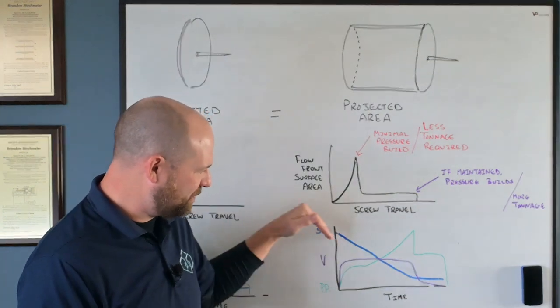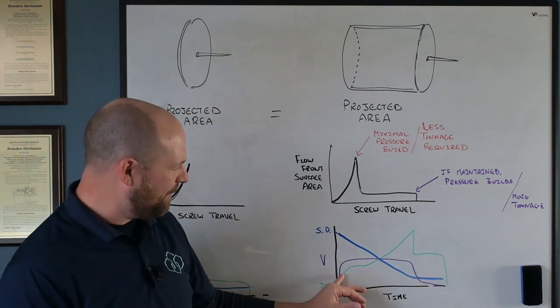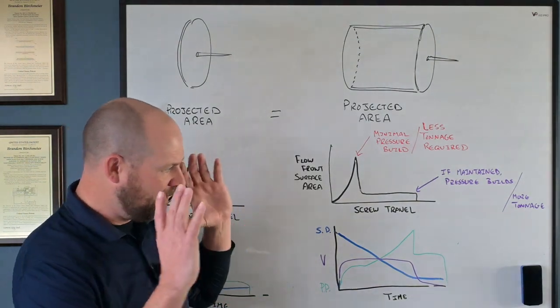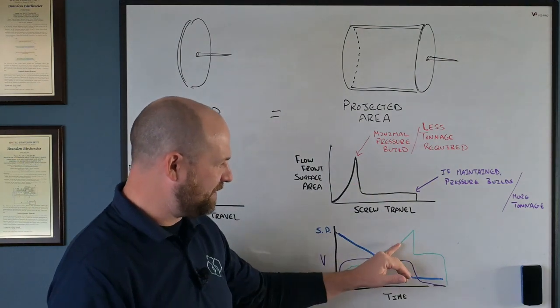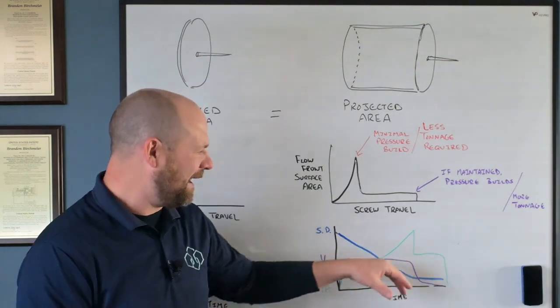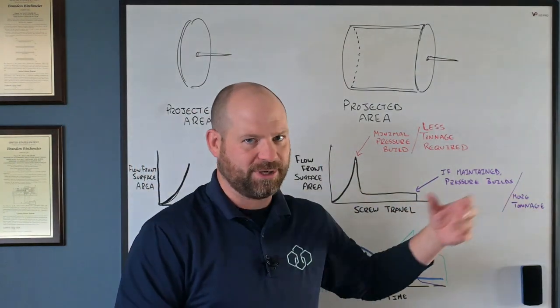That's what I'm representing here. Constant velocity, screw position moving linearly, plastic pressure—not much built as I'm molding the backside of the bucket. However, as I go down the sidewalls, I start increasing pressure during this scenario. So again, a lot more pressure required in this relationship, which tells me I'm going to need more tonnage.